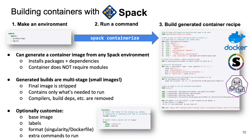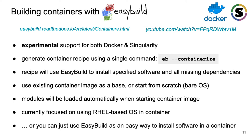Let's now take a closer look at how you can build container images using these tools. SPAC provides a spack containerize command to generate a container recipe for a given environment. This recipe will use the spack install command to install the desired software in the container image. Docker, Singularity, and Podman are supported by SPAC. The generated recipes are multi-stage and the final image is stripped to only include what is needed to run the software, which results in smaller container images. You can customize the base image to use and specify labels or extra commands to run in the container recipe. Similarly, EasyBuild also provides experimental support for generating Docker and Singularity container recipes. The recipe itself will leverage EasyBuild to install the software in the container image. You can use an existing image as a base or start from a bare operating system. The modules for the installed software will be loaded automatically when starting the container image. The container support in EasyBuild is still experimental and currently focused on Red Hat based Linux distributions like CentOS.